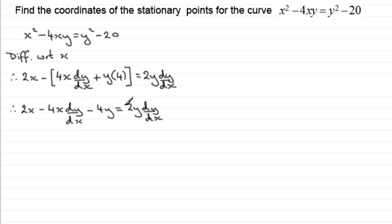So we've got our equation now. Let's just expand this bracket, tidy it up a little. So we therefore have got 2x for the first term. Multiplying this out, we've got minus 4x dy by dx. And then we've got minus 4y. So minus 4y equals 2y dy by dx.